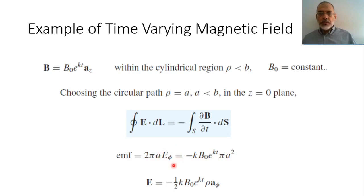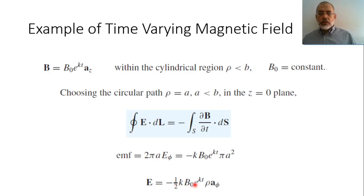The rate of change of B is B₀K e^(kt), so: 2πa · E_φ = -K B₀ e^(kt) · πa². Therefore E_φ = -(1/2) K a B₀ e^(kt). For any arbitrary radius ρ < b, the induced electric field is E = -(1/2) K B₀ e^(kt) ρ in the φ-direction. This is the induced electric field as a function of the time-varying magnetic flux density.